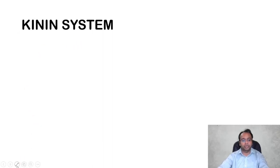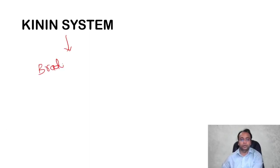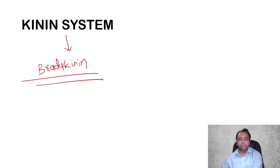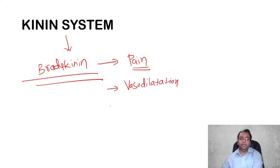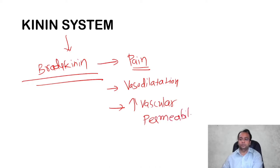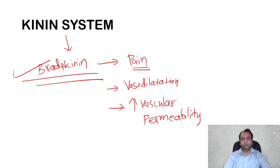In the kinin system, the main product is bradykinin. Bradykinin is a very powerful inflammatory mediator that leads to pain during inflammation — pain is mainly because of bradykinin. It also causes vasodilation and increased vascular permeability.